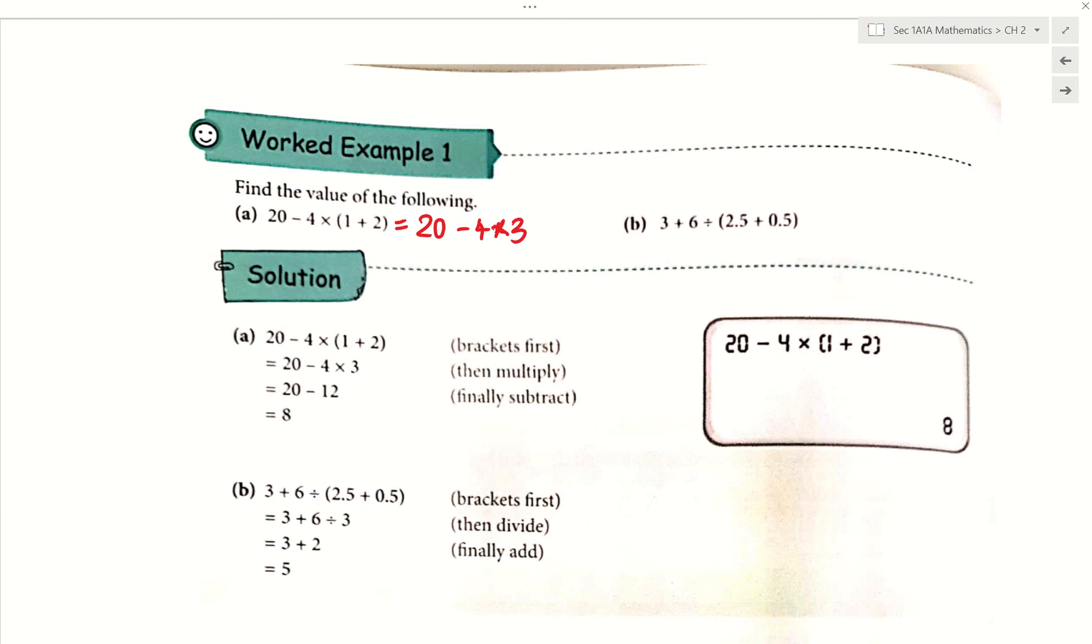After we do the bracket, what are we supposed to do next? Is it the minus or the times? 4 times 3. So the 4 times 3 gives us 12. Everything else just copied. 20 minus 12, then you get an 8. Simple?